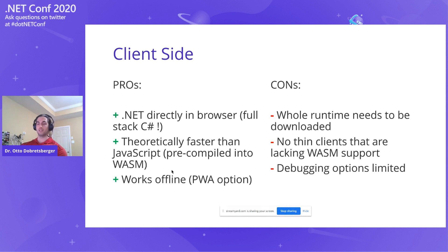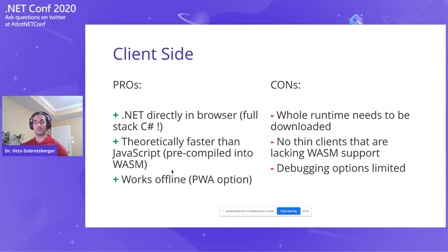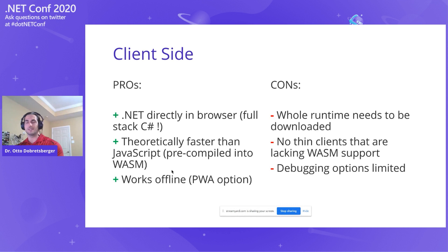So if you have a smart fridge at home and want to write an app for it that automatically reorders milk when you run low, it probably won't run on the smart fridge's browser if it's a client-side hosted Blazor app. Debugging options are also limited — or perhaps more accurately, a little more complicated.